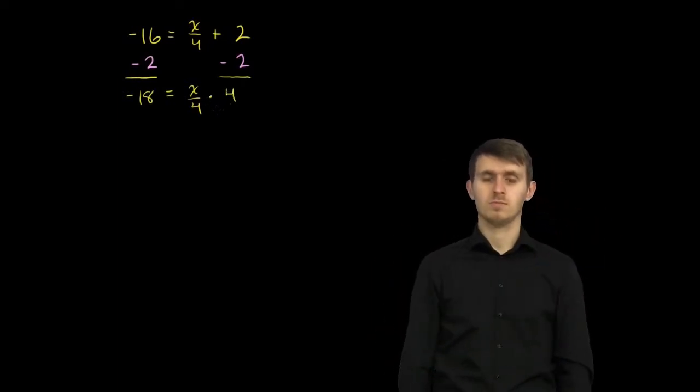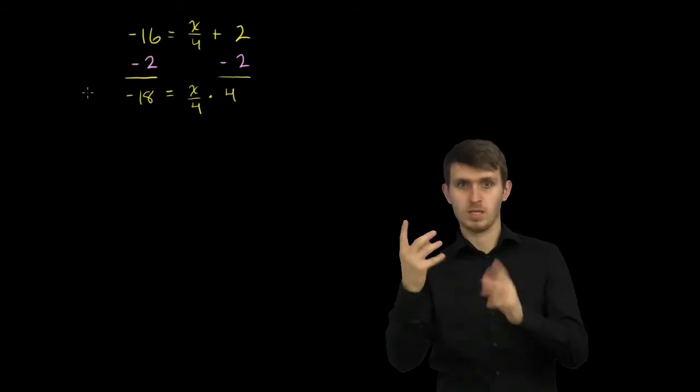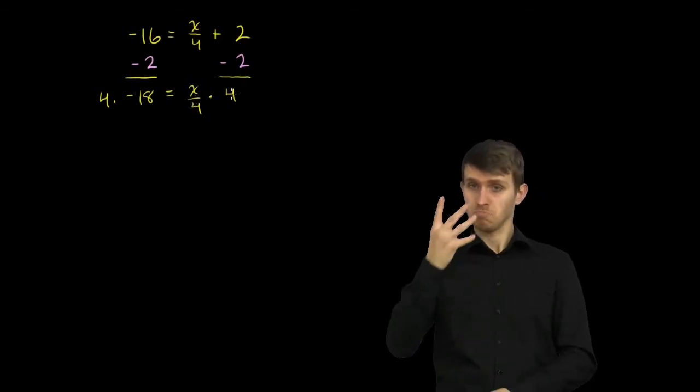But once again, this is an equation. Anything you do to the right-hand side, you have to do to the left-hand side, and vice versa. So if we multiply the right-hand side by 4, we also have to multiply the left-hand side by 4. So we get 4 times negative 18 is equal to x over 4 times 4.